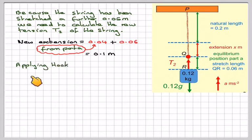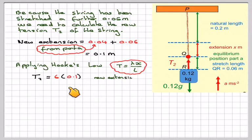Applying Hooke's law, T is equal to lambda X over L, so T2 will be 6 times 0.1, the new extension, divided by the natural length. The natural length was 20 centimeters, so it's 0.2, so careful with the units, which gives me exactly 3 newtons.